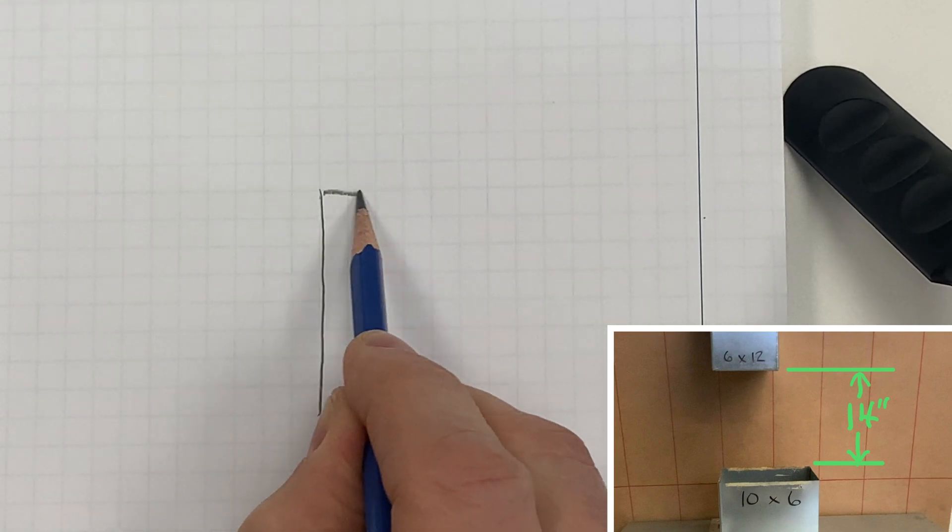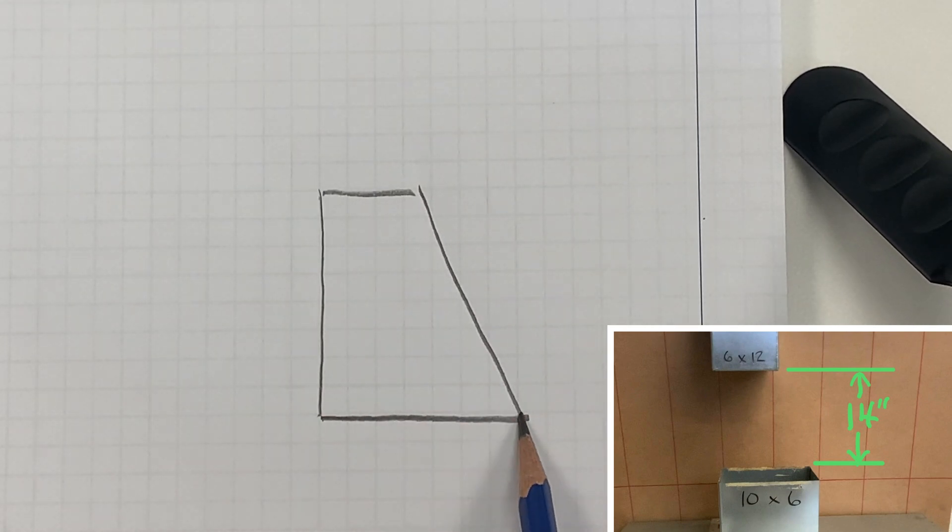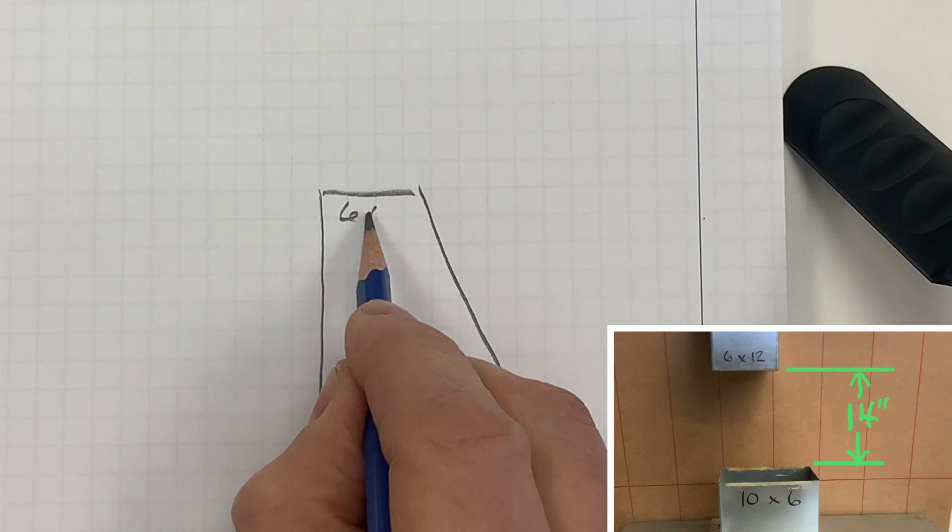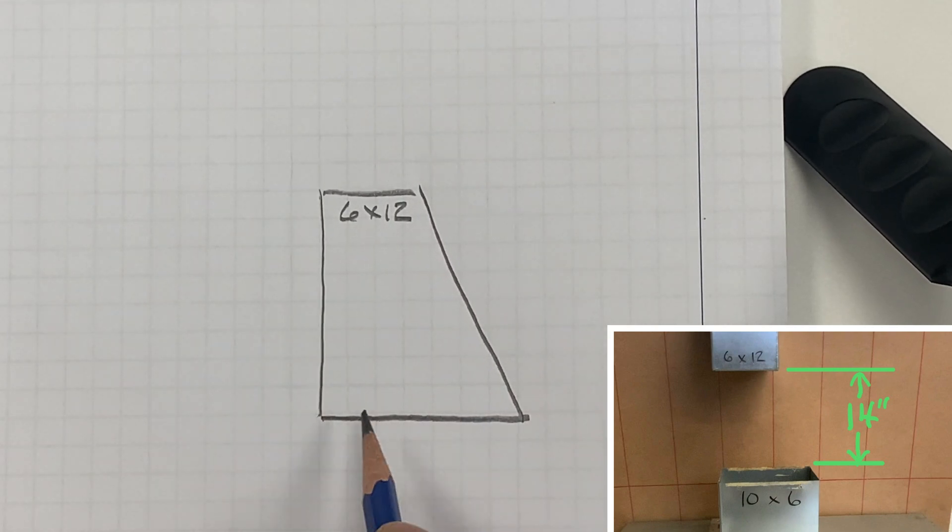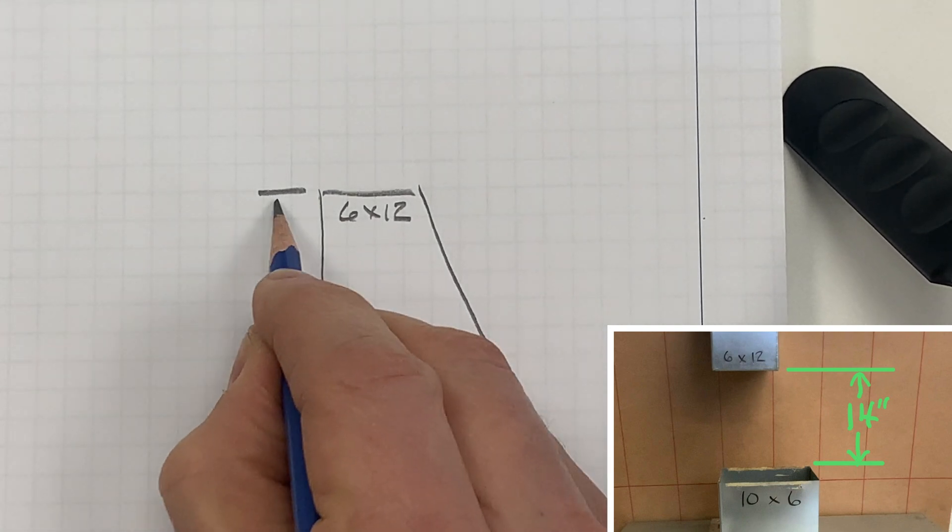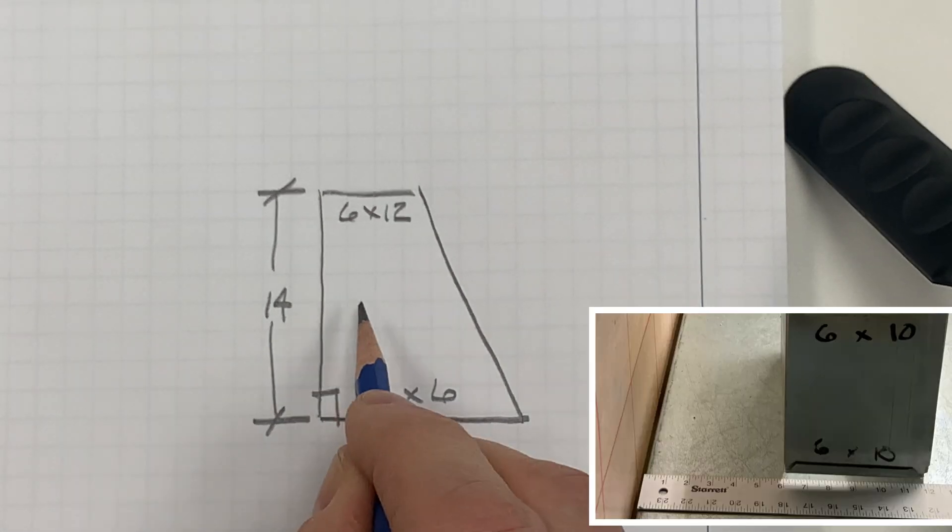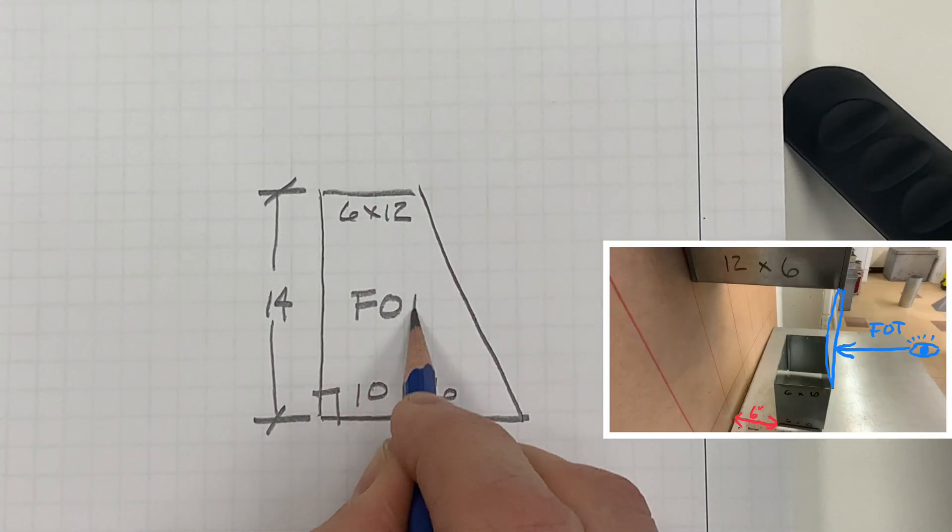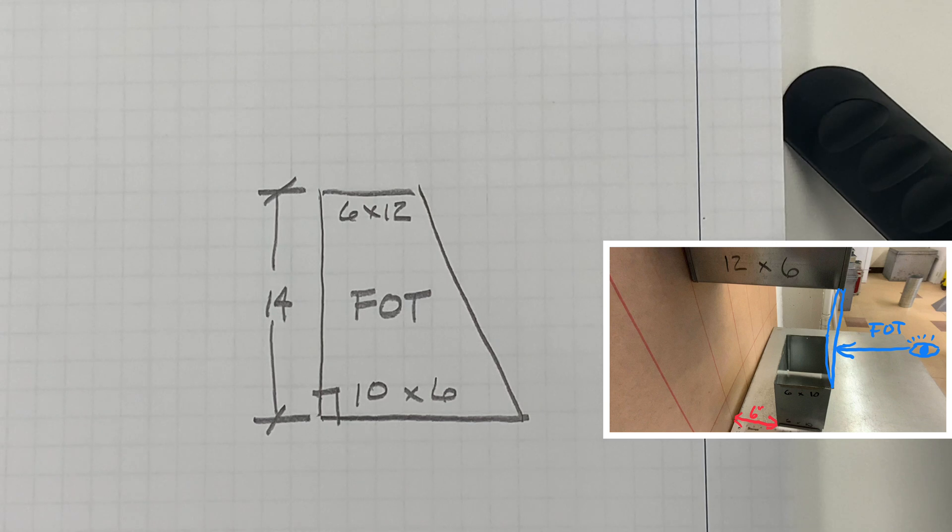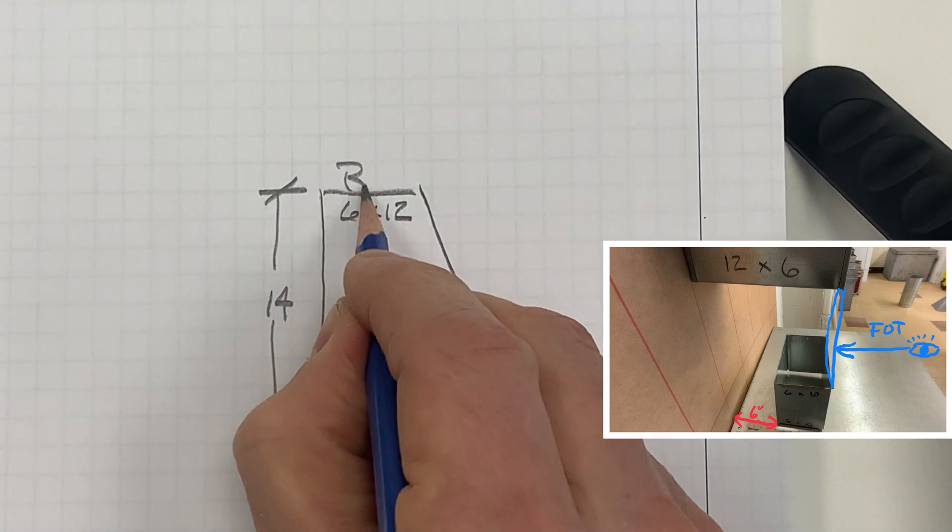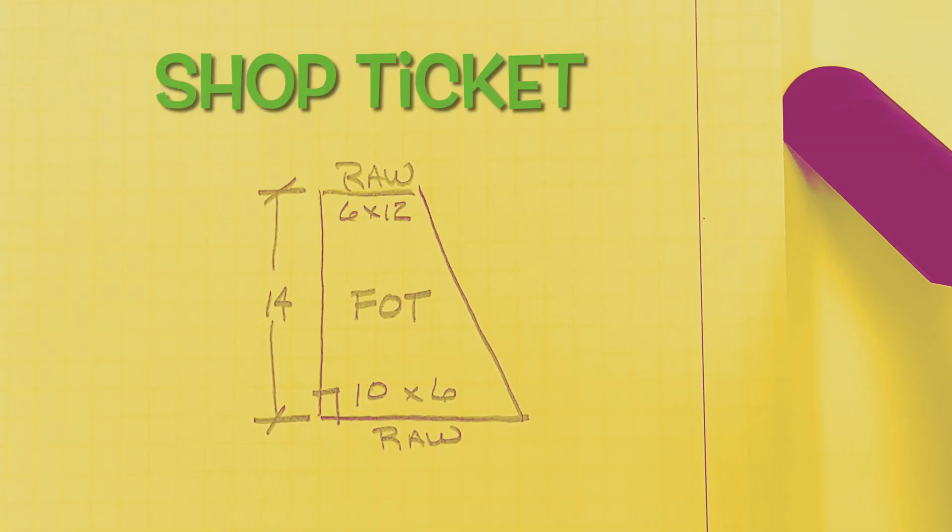So right here I'm going to draw 6 to 10. This is a 6 by 12, first dimension is the side that you're looking at. 10 by 6, we want a 90 degree corner, meaning straight on one side, and let's make this 14 inches tall. Now because we are 6 inches away from the wall, it's going to be a flat on top fitting, meaning the surface that you're looking at is the surface that's closest to you and it will be flat.